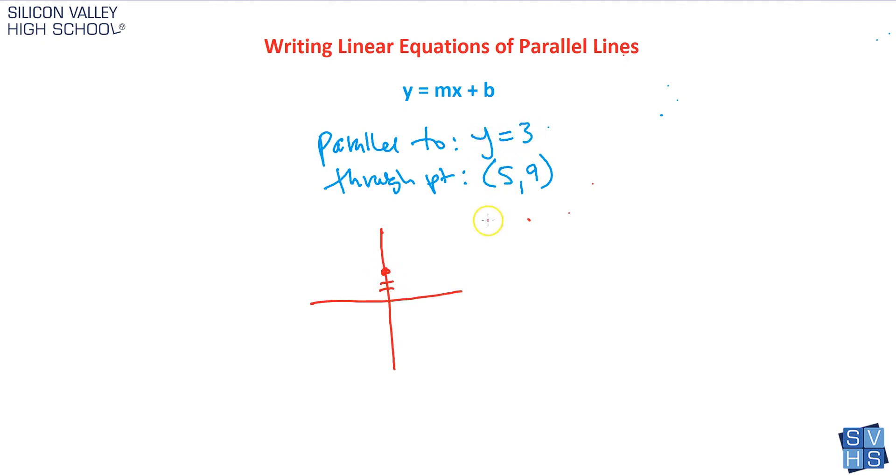y equals 3 would be up here. And remember, this is a blanket statement. So no matter what x is, y is 3. If x is 1, y is 3. x is 2, y is 3. x is 10, y is 3. You end up with a horizontal line. Anytime your equation is as simple as y equals something. And remember, if we are going to be parallel to him, we must also be a horizontal line. So we're also y equals some value. I don't know what yet, but horizontal lines are always y equals a value.